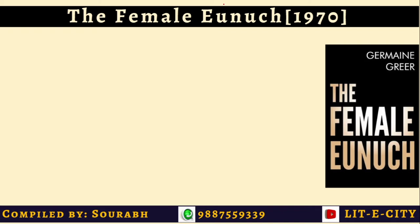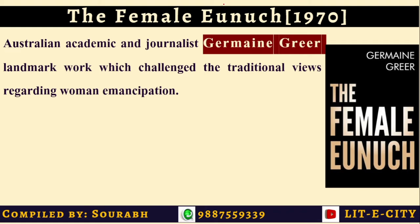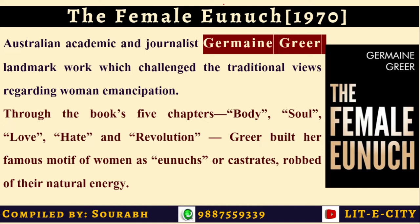The Female Eunuch, first published in 1970 by Australian scholar Germaine Greer, is a landmark work which challenged traditional views regarding women's emancipation. Through the book's five chapters — Body, Soul, Love, Hate, and Revolution — she built her famous motif of a woman who transforms into a eunuch or castrated figure because she is robbed of her natural energy, being trapped into domestic duties and the perfect role of a wife, in which no vitality remains as she is assigned only certain fixed jobs.